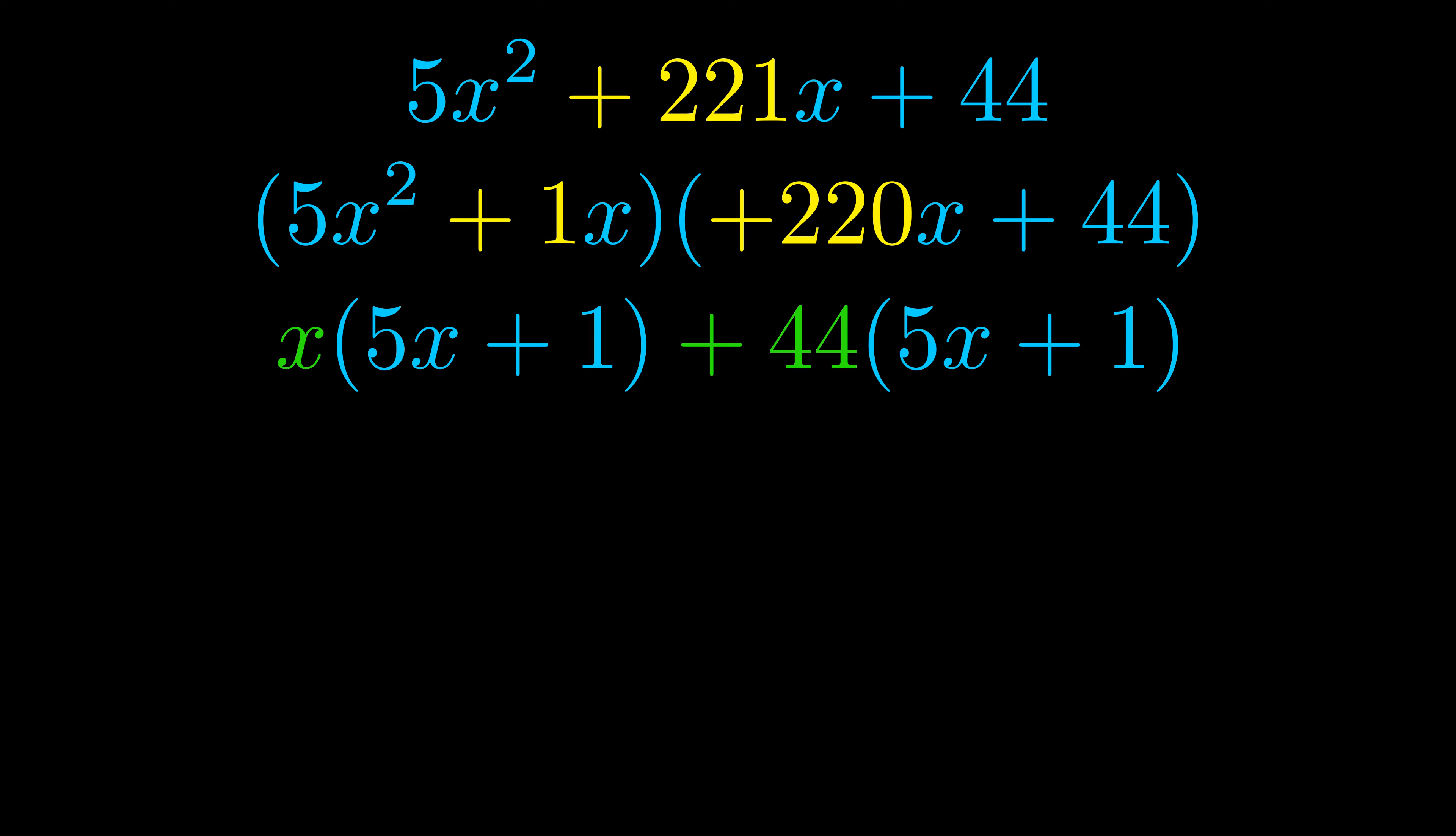Notice also how what remains inside of the parentheses is the same in both cases. The blue values are the same. Those blue values will become one of our factors and we will combine the two green values, the GCFs that we pulled out, to get the other one. And that is our fully factored equation.